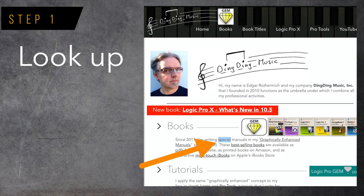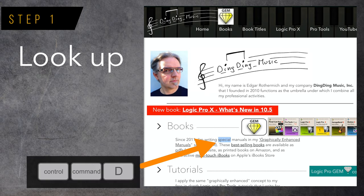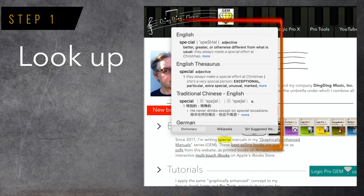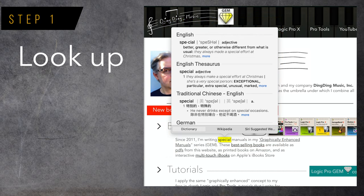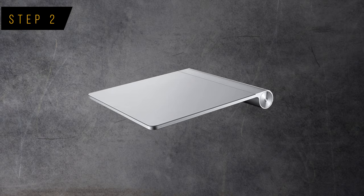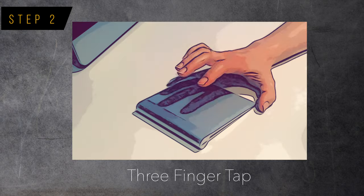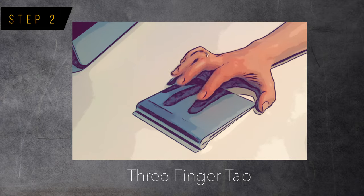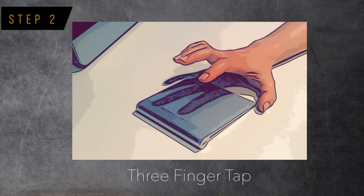Step 1: The Mac operating system had a little-known feature called Lookup. You place the cursor at a word in a text document or web page and press Ctrl+Cmd+D, and a pop-over window displays the dictionary entry for that word. Later, that feature was enhanced with data detection functionality. Step 2: When trackpads became more sophisticated with gestures and multi-touch, the Lookup and data detection feature could be triggered with a three-finger tap on the trackpad.